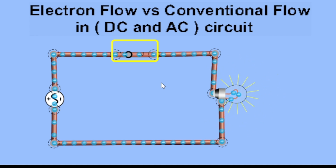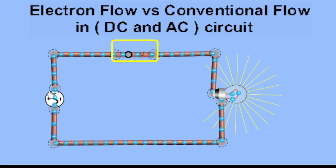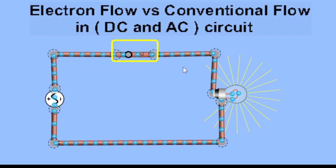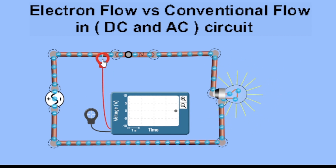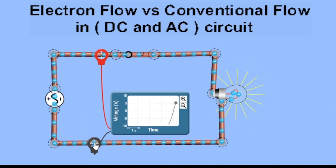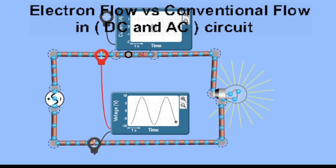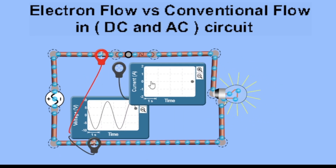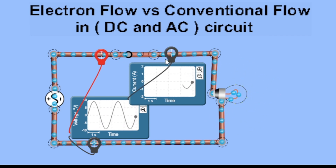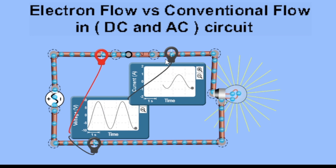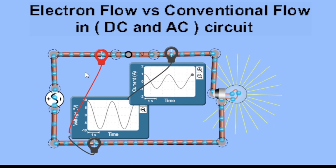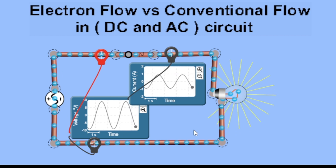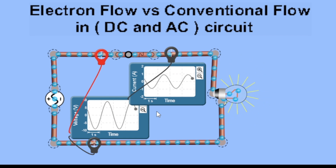As you can see, if the frequency increases, the movement of the electrons increases also. It is moving back and forth. If we use an oscilloscope to check, that movement is in a pulsating, sinusoidal manner — a sine wave. The movement of our current is also pulsating, going from positive to negative and back to positive and back to negative.